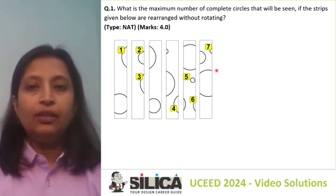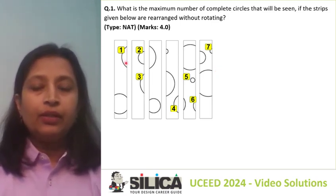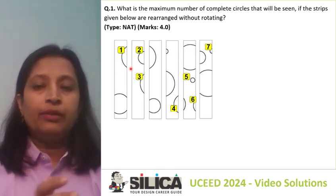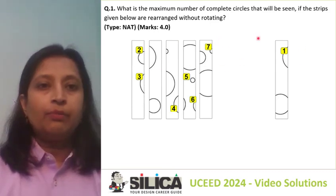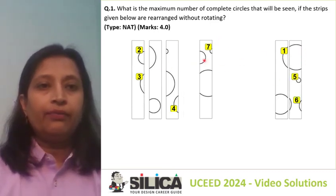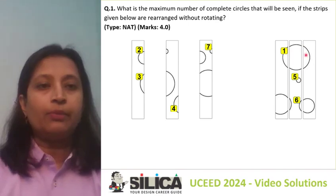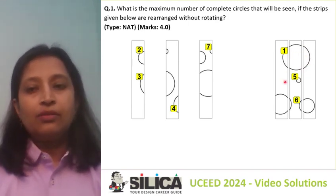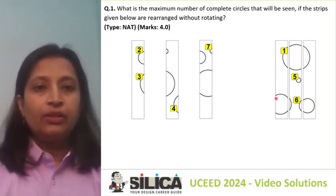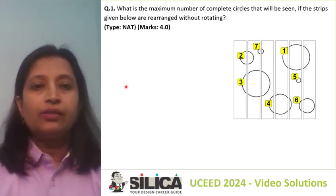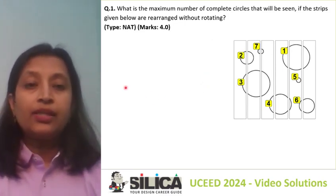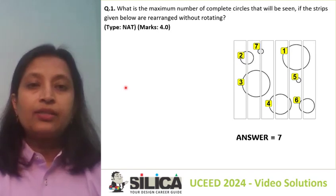Let's recheck whether they are making complete circles. This part looks like it's in continuation, so it will make a complete circle with one more strip. Bringing this side, this is a part of this, and to complete it, bringing this on this side makes a complete circle. Similarly, to complete this one, this strip and then this one. So there are seven circles, and the correct answer is seven.